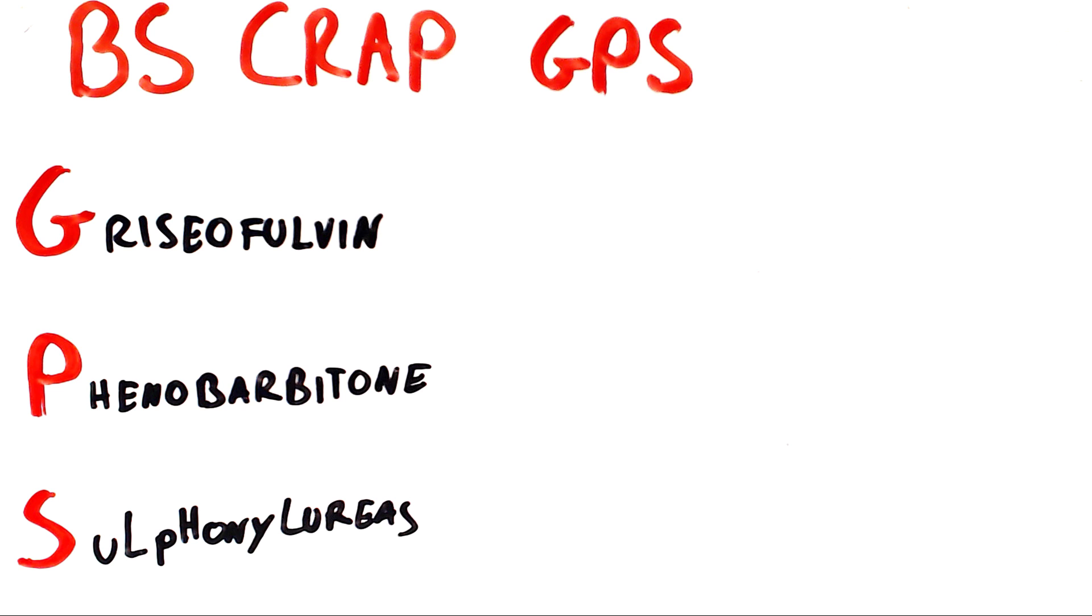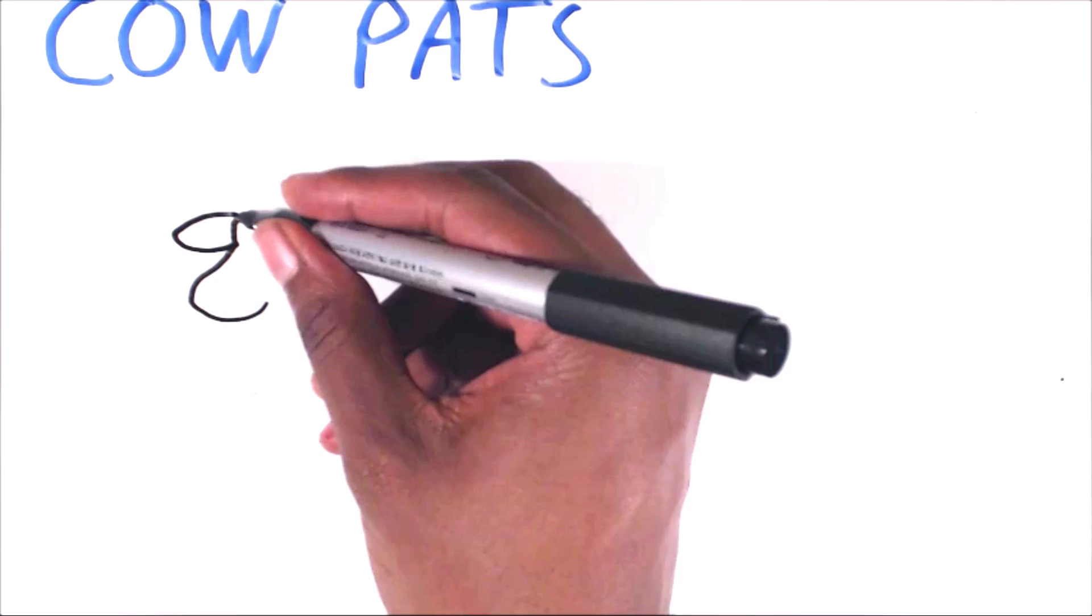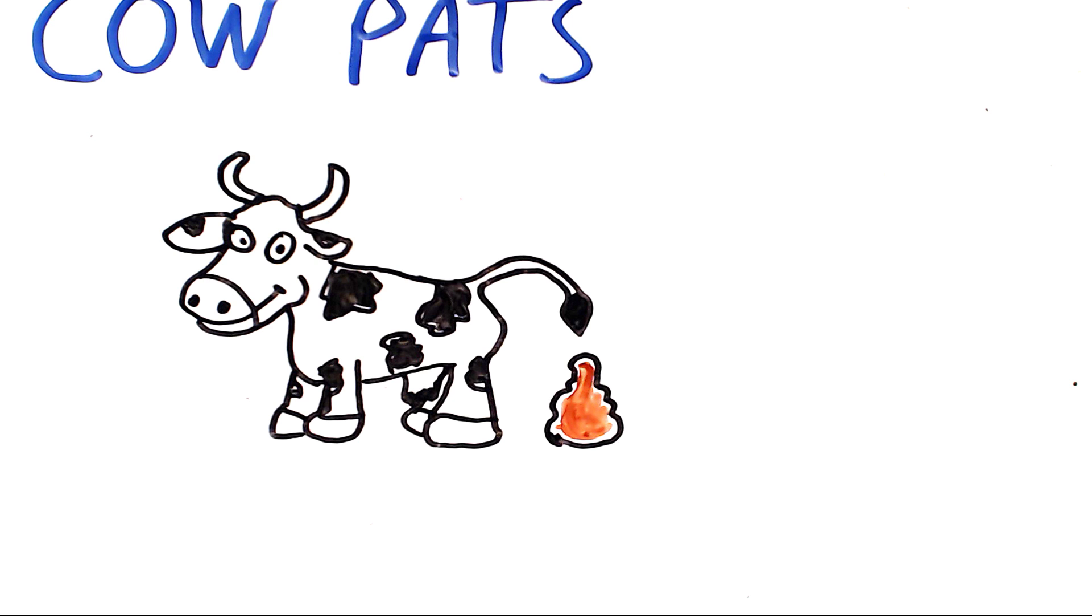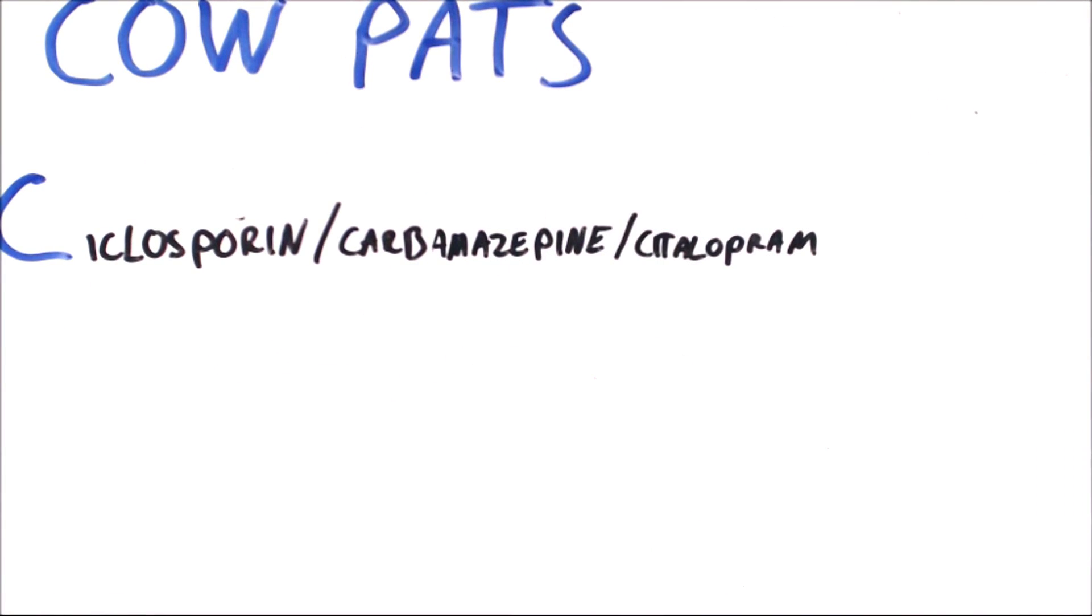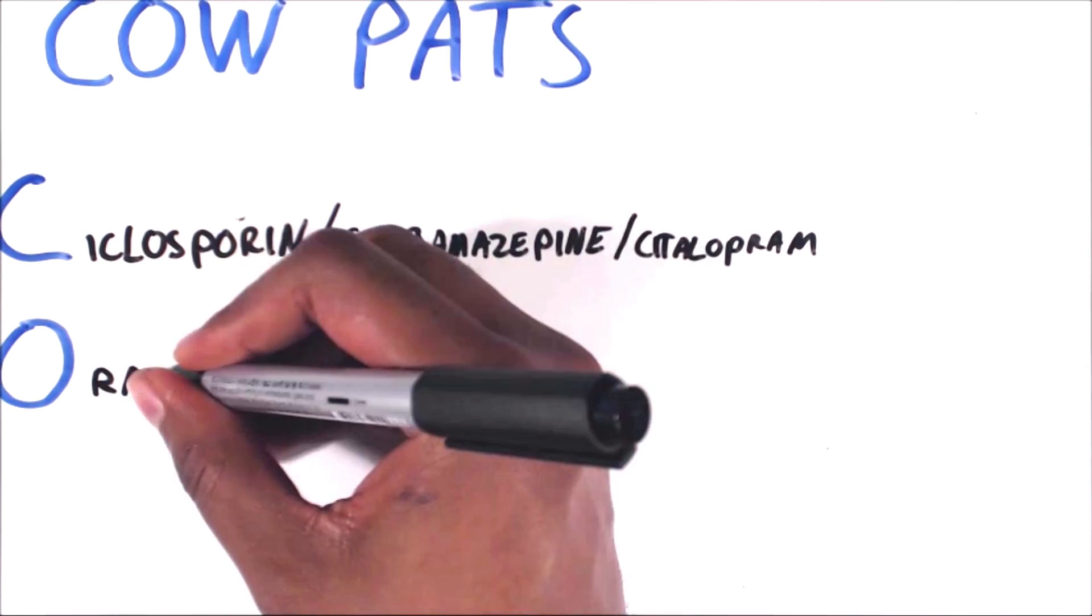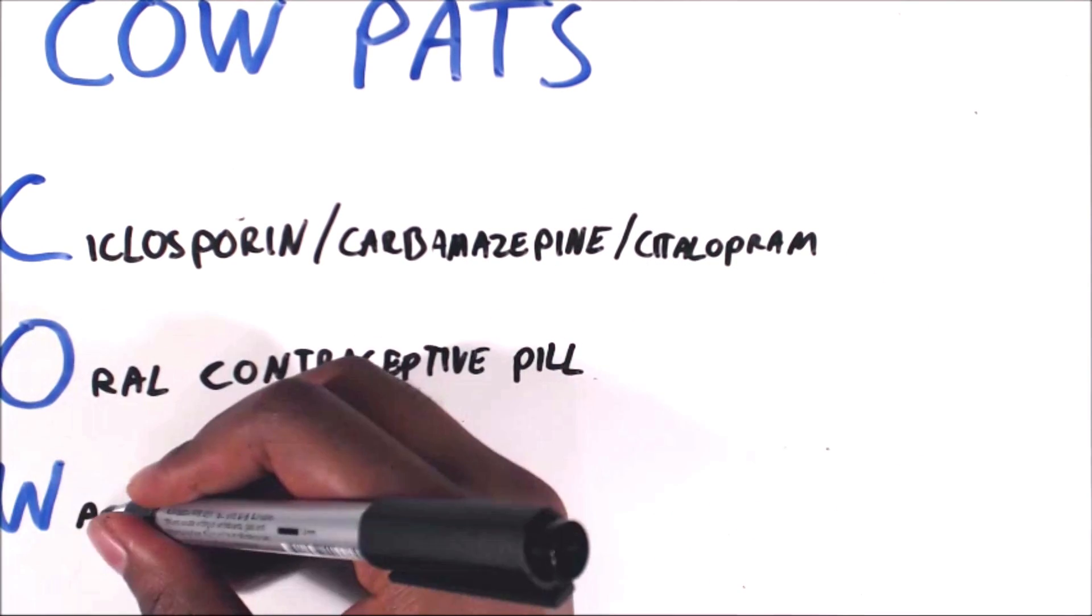Now to remember the drugs that are metabolized by CYP450, you will need to know COW FATS. The C stands for three drugs: cyclosporine, carbamazepine, and citalopram. The O is for oral contraceptive pill and W is for warfarin.